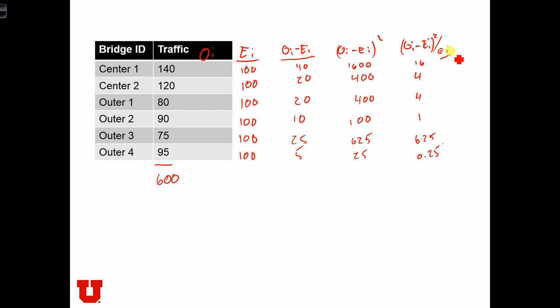Because remember, EI in each case is just 100. Finally, in order to compute the test statistic, which is the sum of OI minus EI all squared over EI. That's our chi squared, i equals 1. In this case, we're doing six categories. This is equal to 31.5. We just summed across down this column.